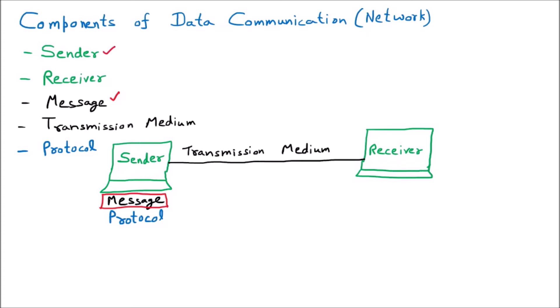The sender is a device that is used to transmit the data. The sender can be a computer, a mobile phone, a video camera — anything that is going to send out data is the sender. Afterward, we have the transmission medium through which the data is going to be sent. This message travels through the transmission medium to the receiver.